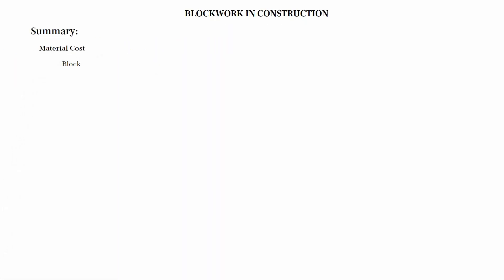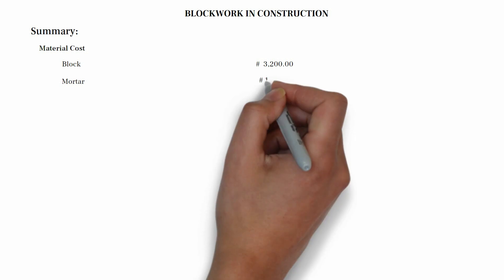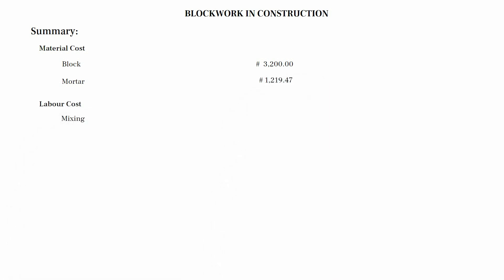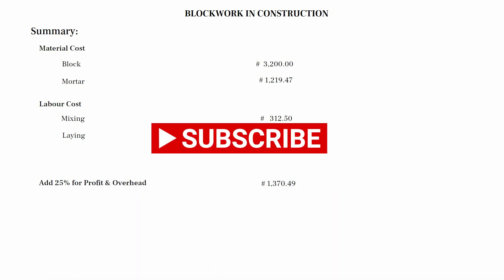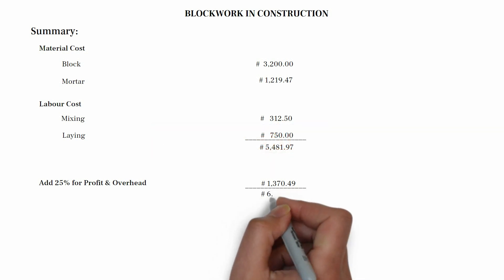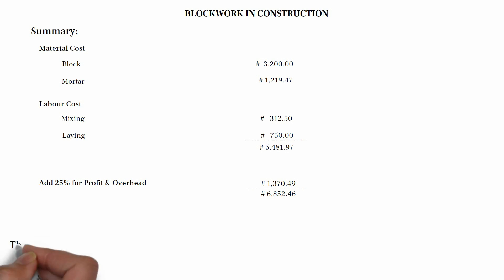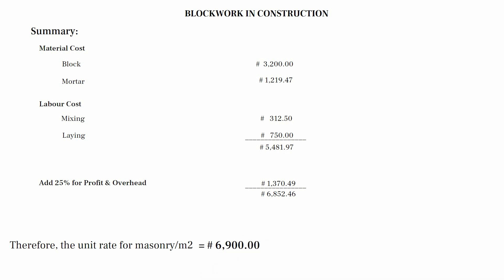Summary: Material cost — blocks equals 3,200 Naira, cost of mortar equals 1,219.47 Naira. Labor cost — mixing equals 312.50 Naira, cost of laying equals 750 Naira. When we sum everything together we have 5,481.97 Naira. Adding 25% for profit and overhead: 25% of 5,481.97 equals 1,370.49 Naira. Total equals 6,852.46 Naira. Rounded up, the unit rate is 6,900 Naira per meter square. Therefore, the cost of building 1 meter square of block work is 6,900 Naira per meter square.